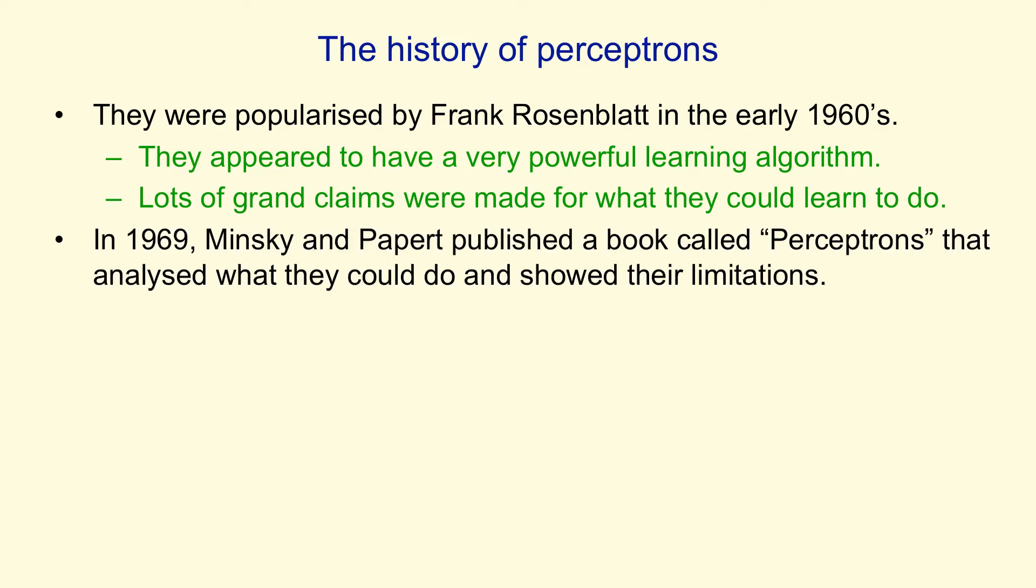In 1969, Minsky and Papert published a book called Perceptrons that analyzed what perceptrons could do and showed their limitations. Many people thought those limitations applied to all neural network models. And the general feeling within artificial intelligence was that Minsky and Papert had shown that neural network models were nonsense, or that they couldn't learn difficult things.